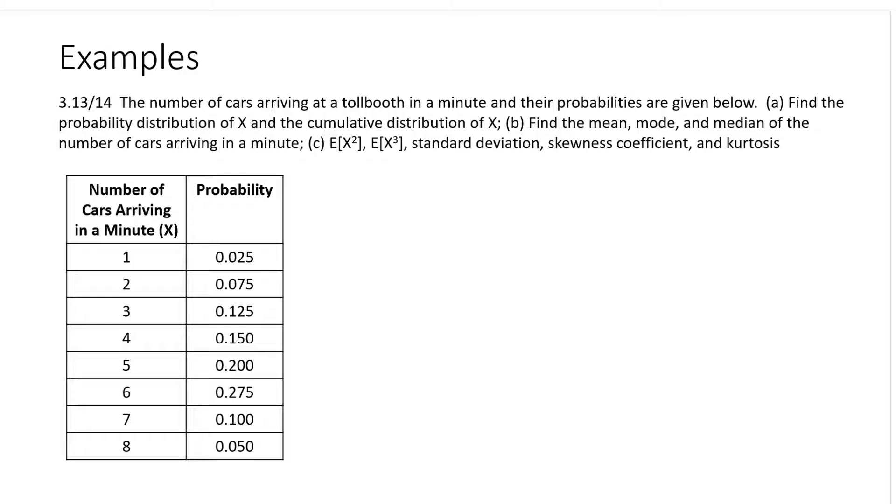In this example I have some data, or at least frequency information, about the number of cars arriving at a tollbooth. I don't think there are tollbooths anymore in California, so maybe it's a traffic signal. The number of cars arriving at a traffic signal in a minute.